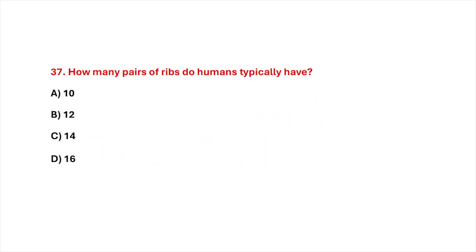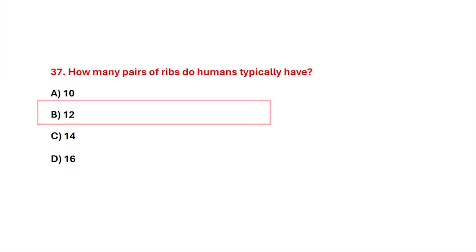Question 37. How many pairs of ribs do humans typically have? Correct answer is option B, 12.